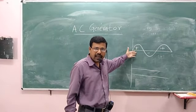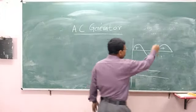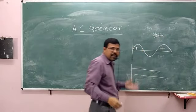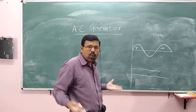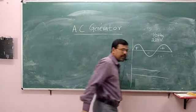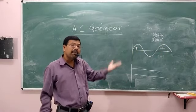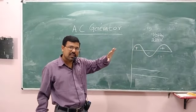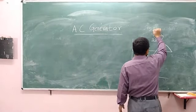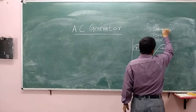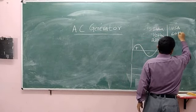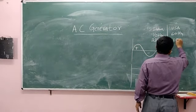In India, the frequency of AC current is 50 hertz and the RMS voltage is 220 volts. But in America, its frequency is 60 hertz and the RMS voltage is 110 volts.